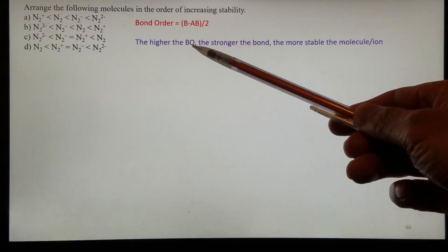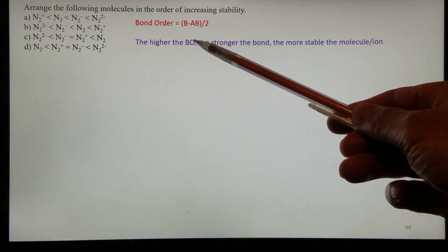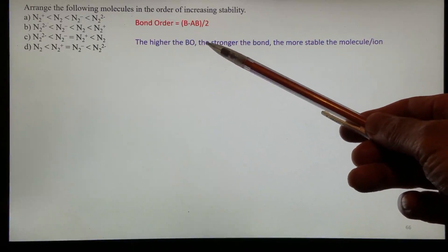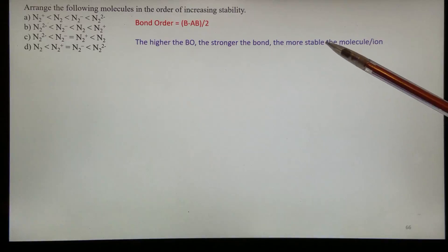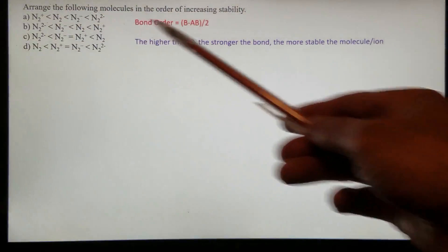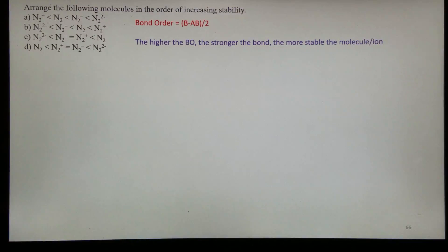The higher the bonding orbital, or the higher the bonding order, the stronger the bond, and then the more stable the species, either molecule or ion.